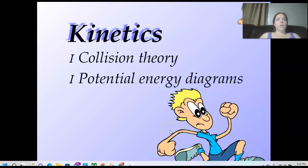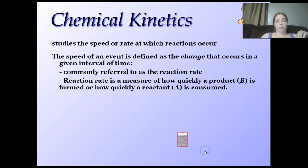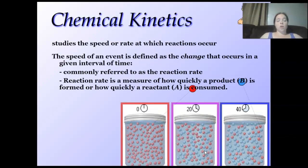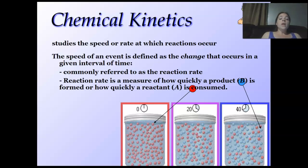This is the last part of unit 1011, kinetics. We're going to start looking at collision theory and potential energy diagrams. Chemical kinetics studies the speed or rate at which reactions occur. The speed of an event is defined as the change that occurs in a given interval of time, commonly referred to as the reaction rate.